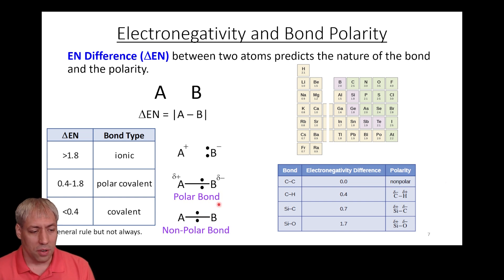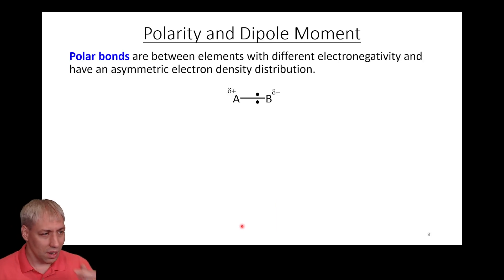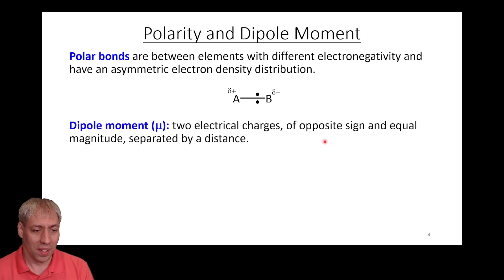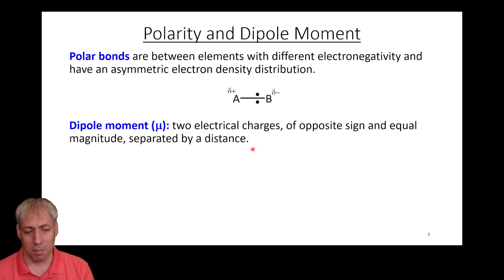The nomenclature we use is polar bond versus non-polar bond, and this is really important when we start talking about intermolecular forces. A polar bond says it's still a covalent bond but it's not sharing those electrons equally — B is more electronegative, has a partial negative charge, and the other side has a partial positive charge. What dictates that this is a polar bond is something called a dipole moment.